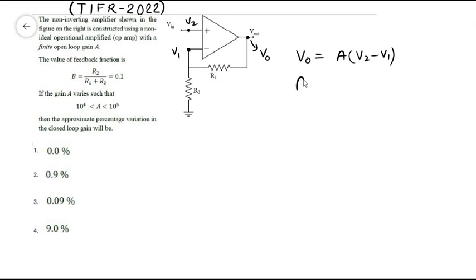The closed loop voltage gain is given by the output voltage upon the input voltage, which is v_in. So we have to find v_o and also v1.